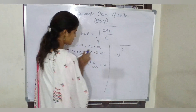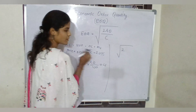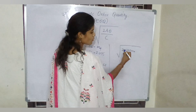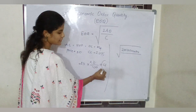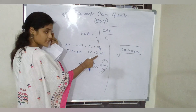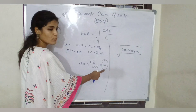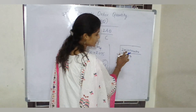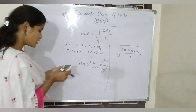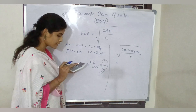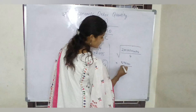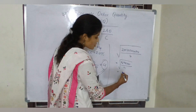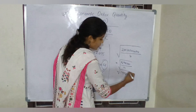Now substitute into the formula: EOQ = √(2 × 1200 × 24 / 4). So 2 × 1200 × 24 = 57,600. Then 57,600 divided by 4 gives 14,400. So we need the square root of 14,400.